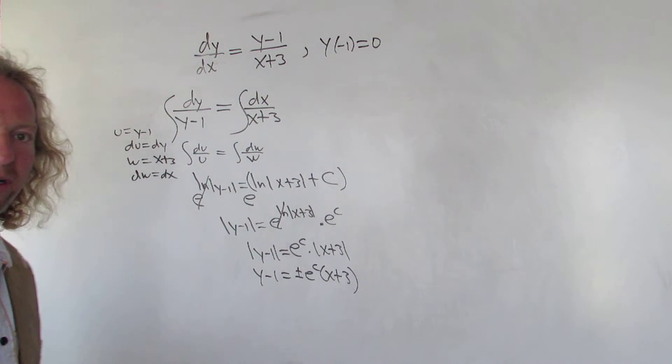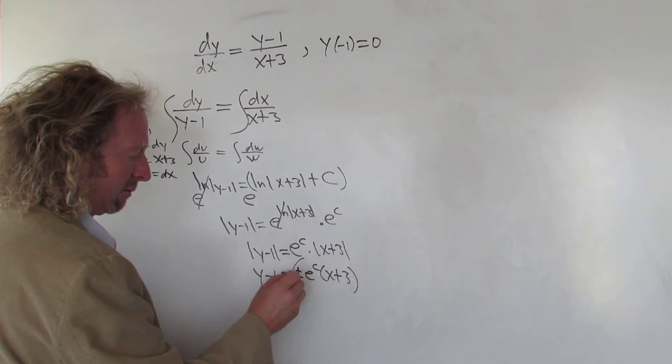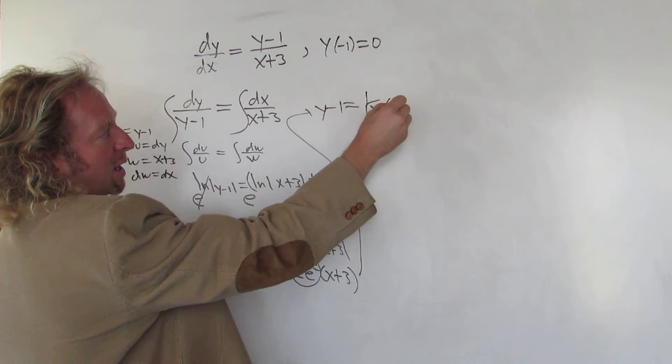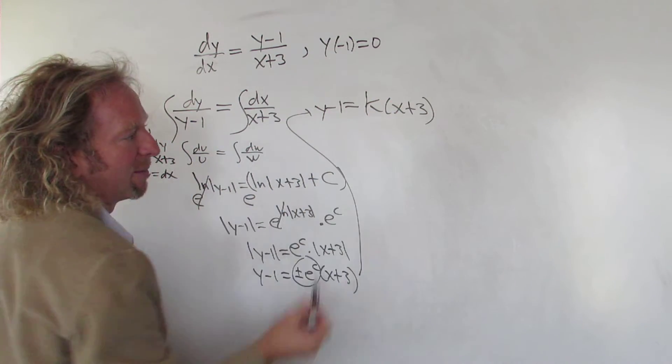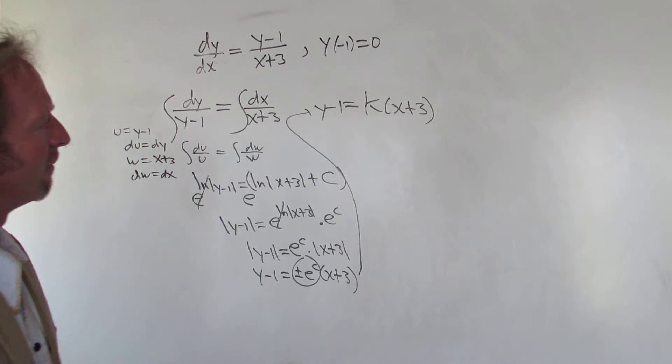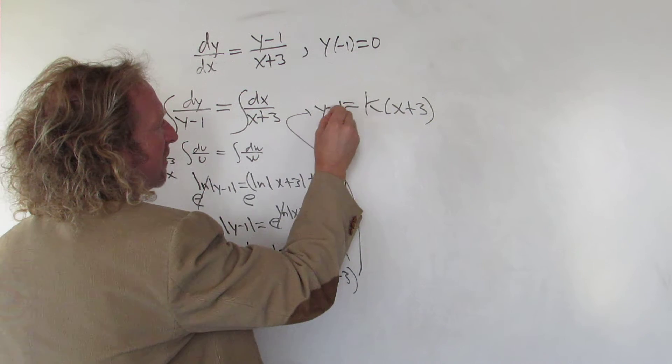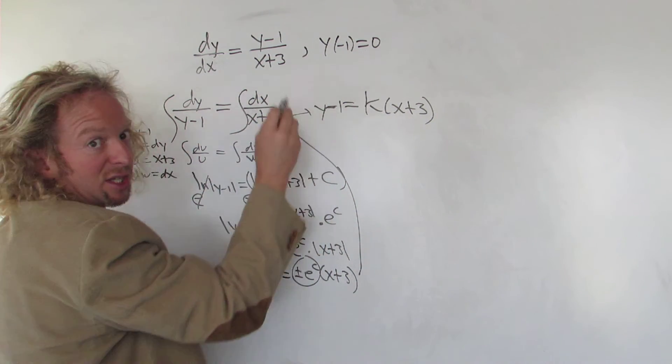At this point, we can rename our constant - let's call it k. So we have y minus one equals k times x plus three. You can rename constants all day long. And then maybe now let's find k. To find k, we're going to use the initial condition.